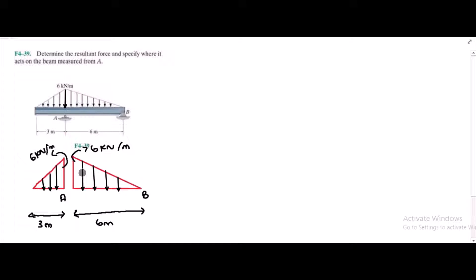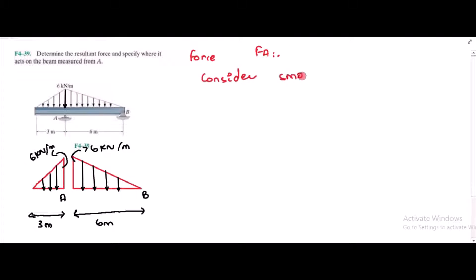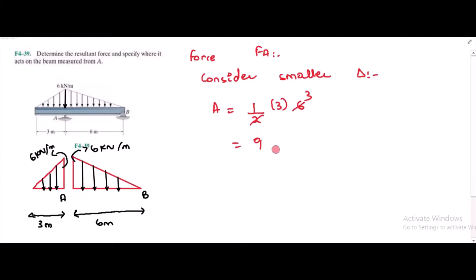If you look at the figure, the distributed loading is forming the shape of a triangle. So I can find the area of each triangle to find their resultant. For force FA, consider the smaller triangle. The area of the smaller triangle is equal to half of the base, which is 3 meters, into the altitude, which is 6 kN per meter.